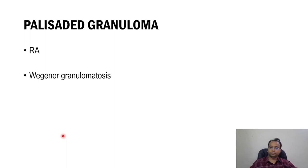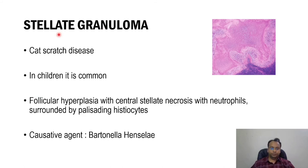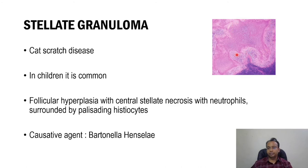Palisaded granuloma means there will be a palisading appearance of epithelioid cells — they are arranged in a palisaded pattern. It is seen in rheumatoid arthritis and vaginal granulomatosis. Stellate granuloma is seen in cat scratch disease; the causative agent is Bartonella henselae. It is very common in children and affects the lymph nodes. In this diagram, you can see follicular hyperplasia with central stellate star-shaped necrosis and lots of neutrophils within it, surrounded by palisaded histiocytes.